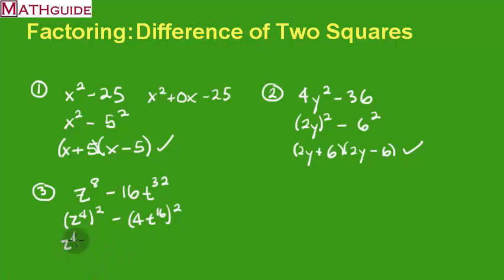So we do z to the fourth minus 4t to the 16th, and we also have another one: z to the fourth plus 4t to the 16th. Oh, but not so fast. I am now going to use the highlight here. I'd like to show you that here we have another difference of two squares. Right? There's a difference, and these are two squares. So I actually could factor this term again.